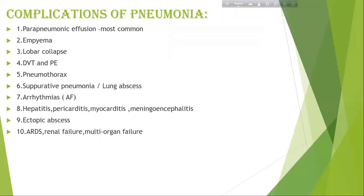Complications of pneumonia include: parapneumonic effusion (most common), empyema, lobar collapse, deep vein thrombosis and pulmonary embolism, pneumothorax, suppurative pneumonia or lung abscess, arrhythmia, atrial fibrillation, hepatitis, septic arthritis, myocarditis, meningitis, pericarditis, ectopic abscess (in case of Staphylococcus aureus), acute respiratory distress syndrome, renal failure, and multi-organ failure.